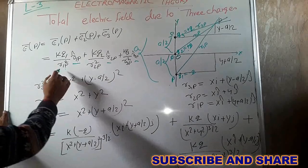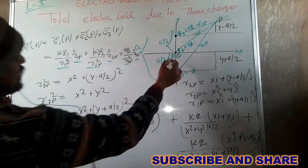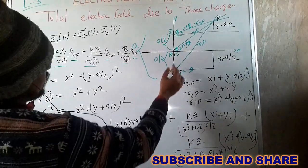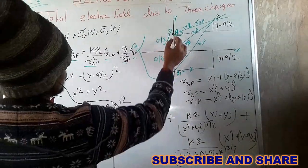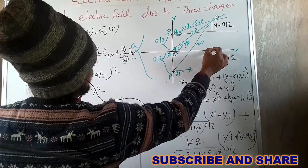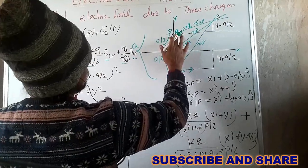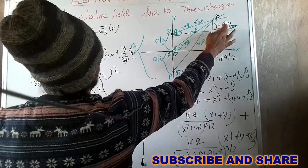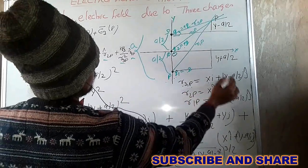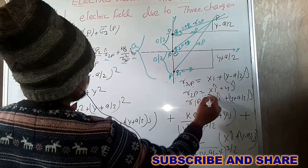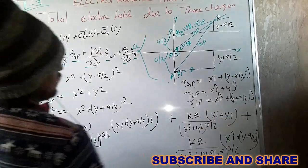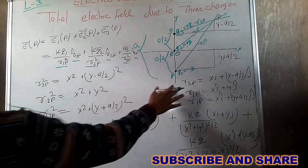We have to calculate R1P, R2P, and R3P as unit vectors. The distance of Q3 from the origin is A/2, and similarly for the other charge, so P and S are at equal distances from the origin O. The Y coordinate gives Y minus A/2 for one charge and the X coordinate for another. So R3P can be written as X*i plus (Y minus A/2)*j, and R2P can be written as X*i plus Y*j.